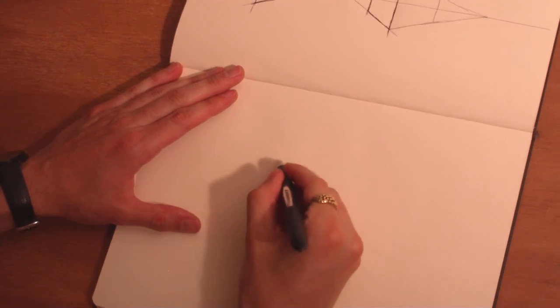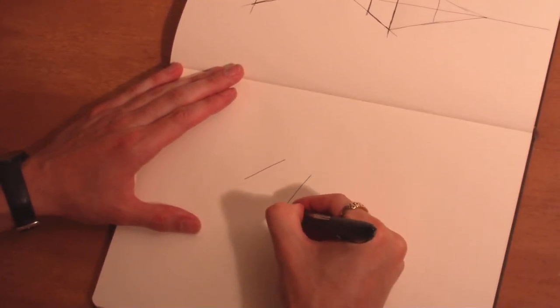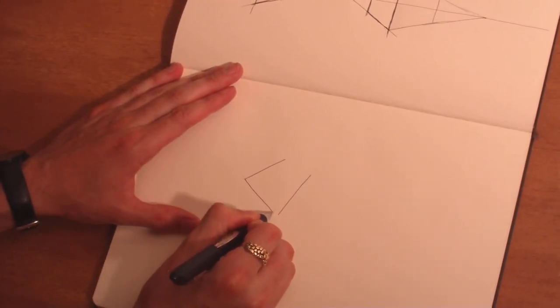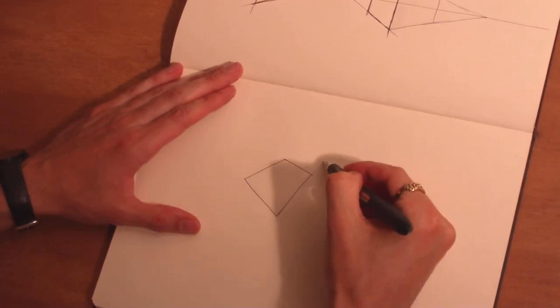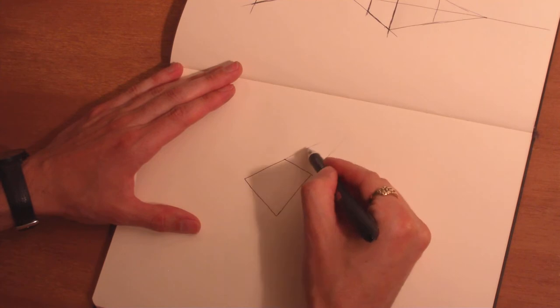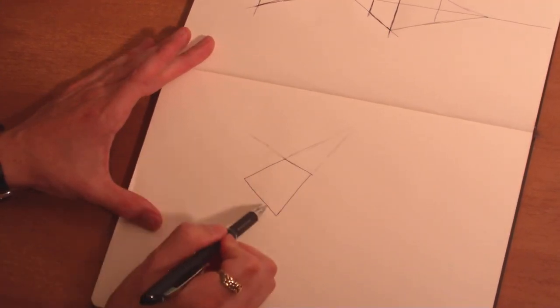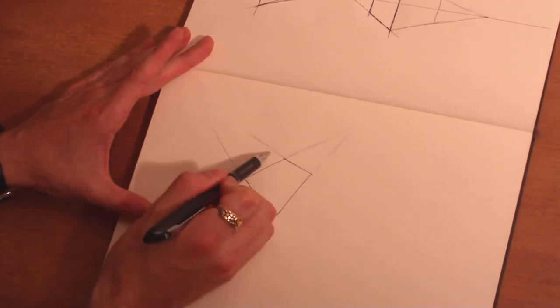So that means that if we draw a plane like this, eventually these lines, if we extend them out far enough, are going to intersect. And these lines, if we extend them out far enough, are going to intersect.